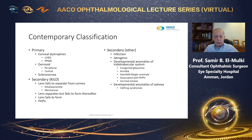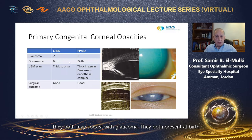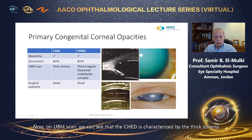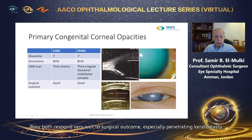Primary congenital opacities include two entities: congenital hereditary endothelial dystrophy (CHED) and posterior polymorphous dystrophy (PPMD). They both may coexist with glaucoma and both present at birth. On UBM scan, CHED is characterized by thick stroma with a normal anterior chamber. In posterior polymorphous dystrophy, UBM shows a thick irregular Descemet's endothelial complex with again a normal anterior chamber. They both respond very well to surgical intervention, especially penetrating keratoplasty.